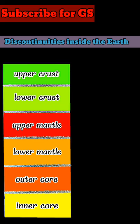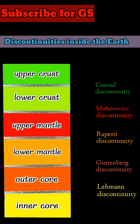Let's see the discontinuities inside the earth. Conrad, Moho, Rapity, Gutenberg, and Lehman are the five discontinuities inside the earth.